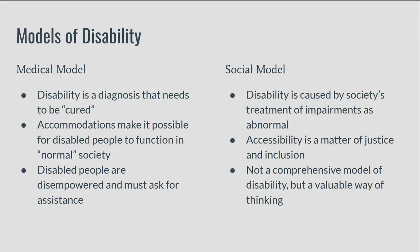Some valuable background here are the models of disability, which have been well described by disabled folks and their allies in the disability rights movement. Under what's known as the medical model of disability, disability is a diagnosis that needs to be cured by any means necessary. Accommodations make it possible for disabled people to function in so-called normal society, but disabled people are disempowered and must ask for assistance. The medical model puts the responsibility for overcoming barriers on the person with an impairment.